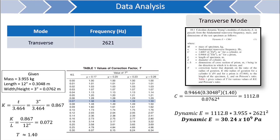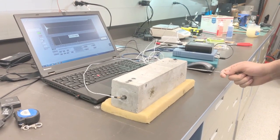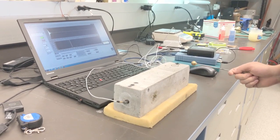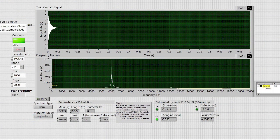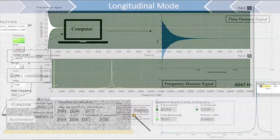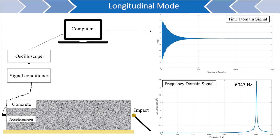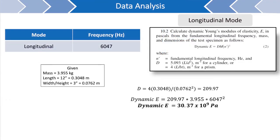Now let's take a look at exciting the longitudinal mode of the specimen. Here are the results found in the LabVIEW program after collecting the signal, and the time domain and frequency domain signals can be seen after being plotted in MATLAB. The peak fundamental longitudinal frequency was found to be 6047 Hz. Using this peak frequency, the dynamic modulus of elasticity can be calculated again, this time using the fundamental longitudinal frequency. The step-by-step calculation results in a calculated dynamic modulus of elasticity of 30.37 GPa.